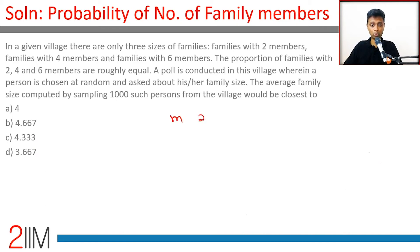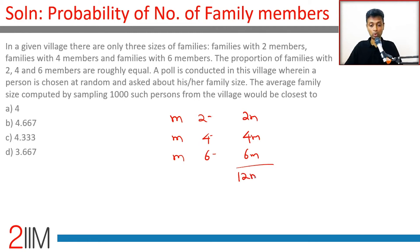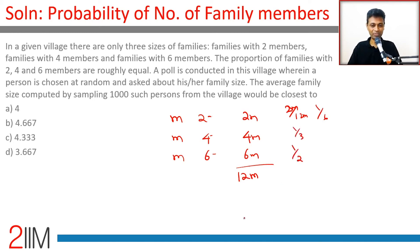More rigorously: assume m two-member families, m four-member families, and m six-member families. Total family members are 2m, 4m, and 6m, with an overall total of 12m. The probabilities are 2m/12m = 1/6, 4m/12m = 1/3, and 6m/12m = 1/2.